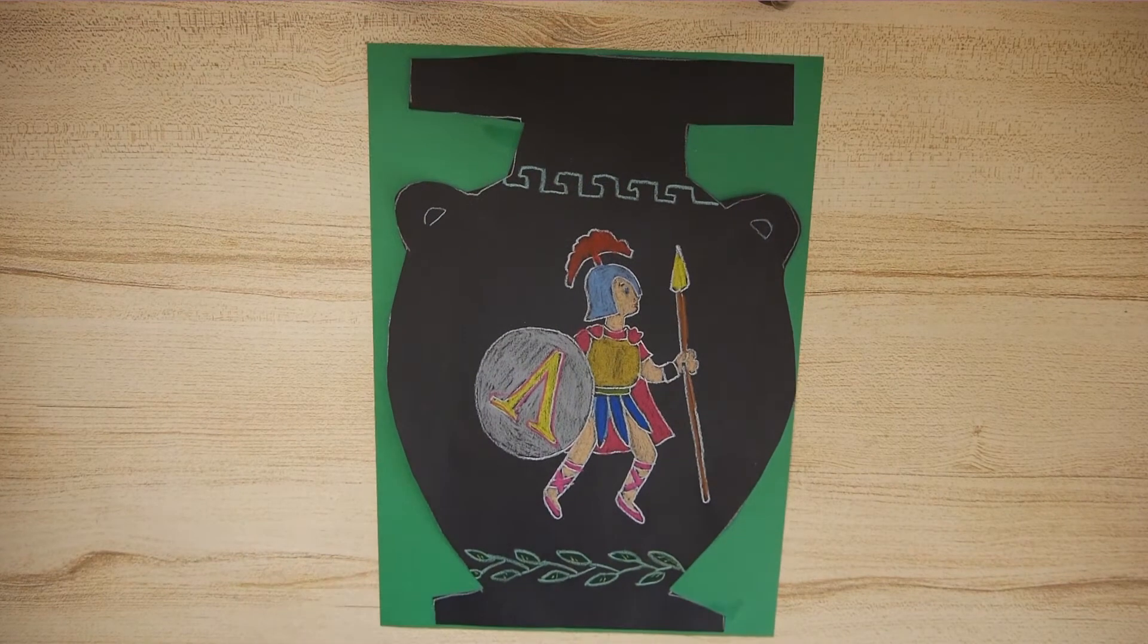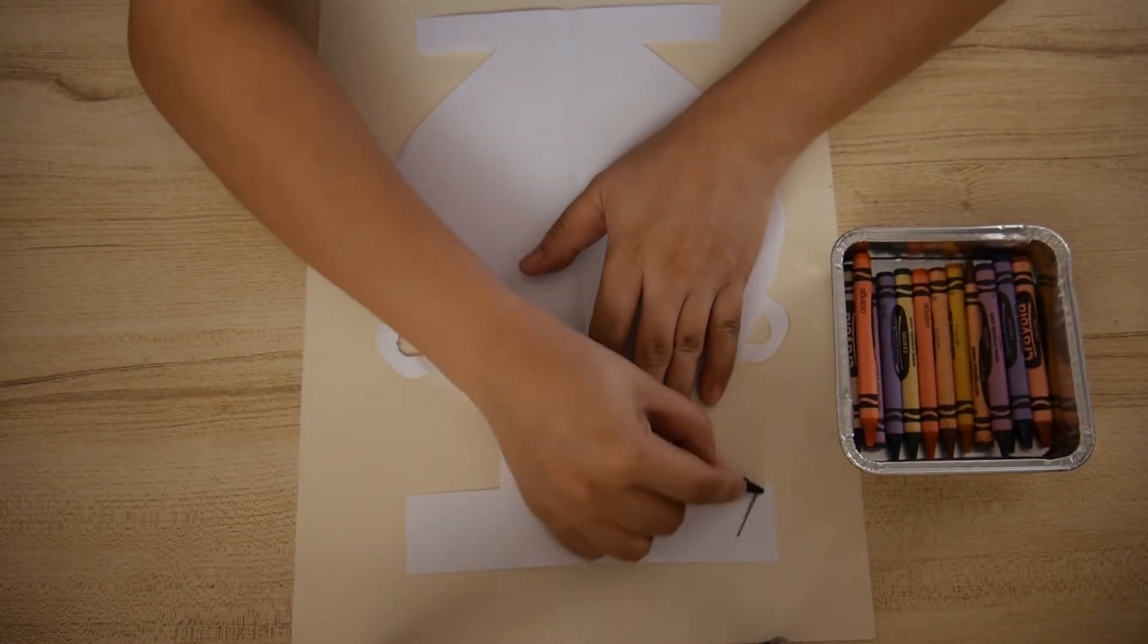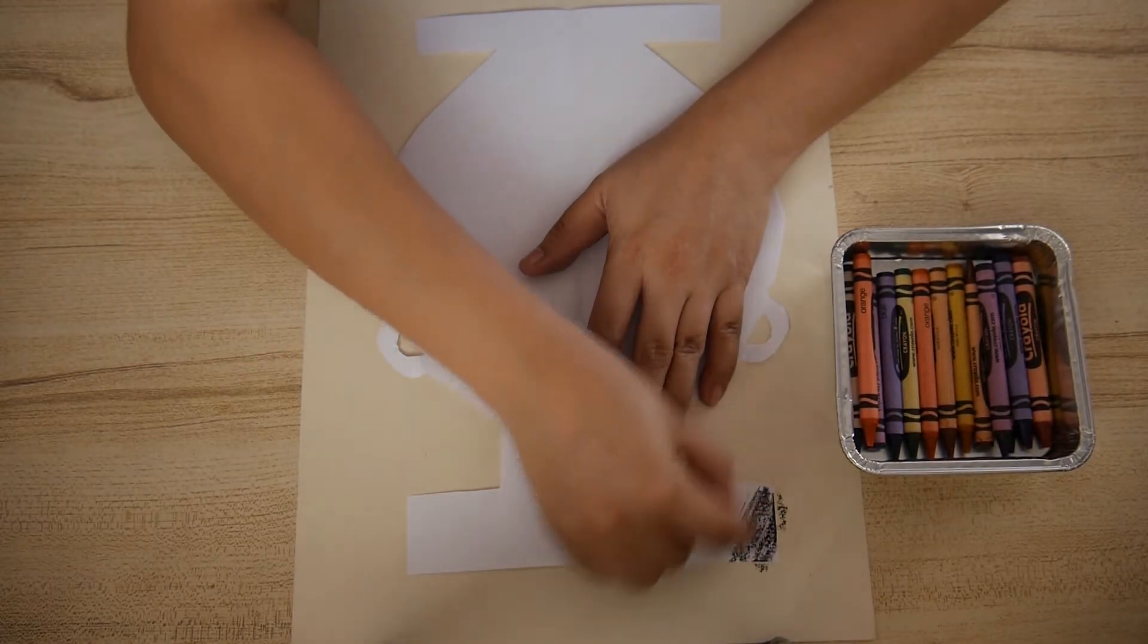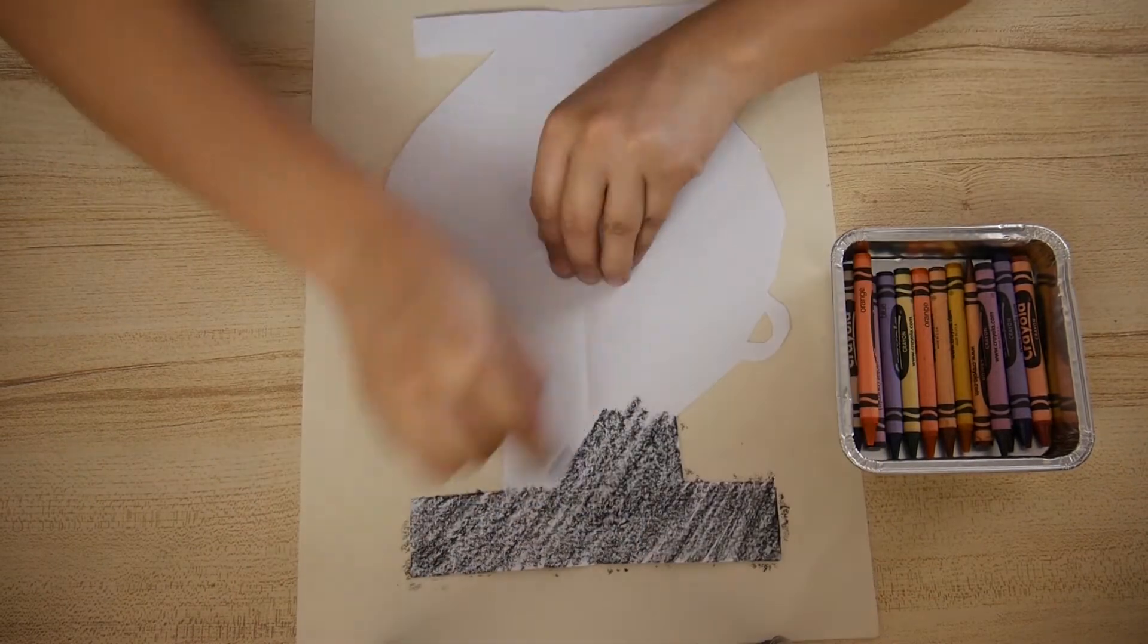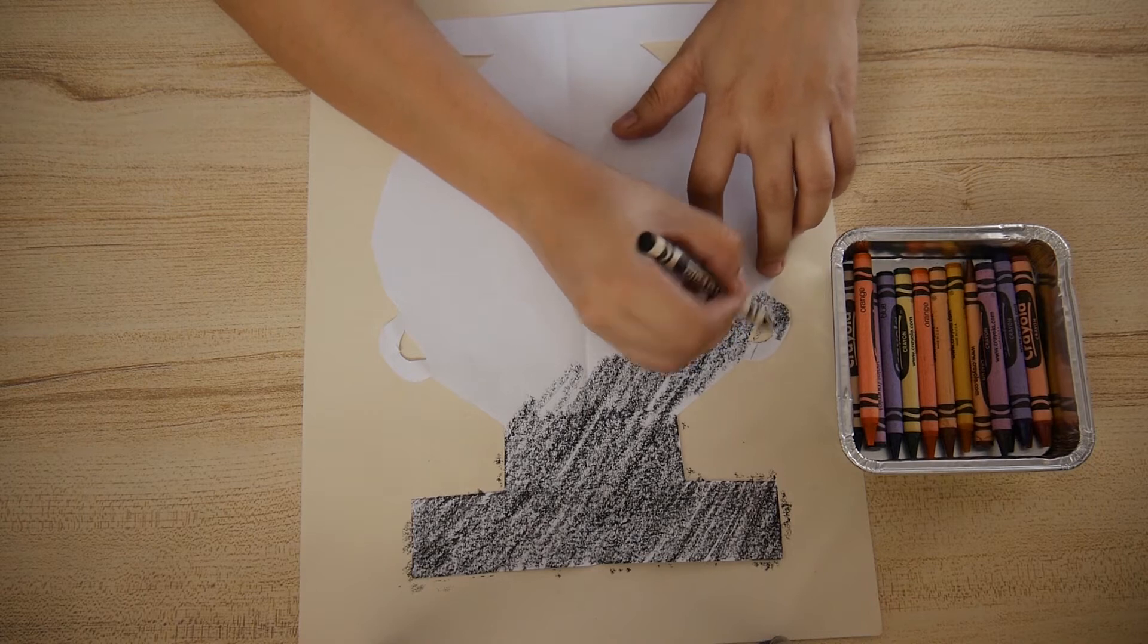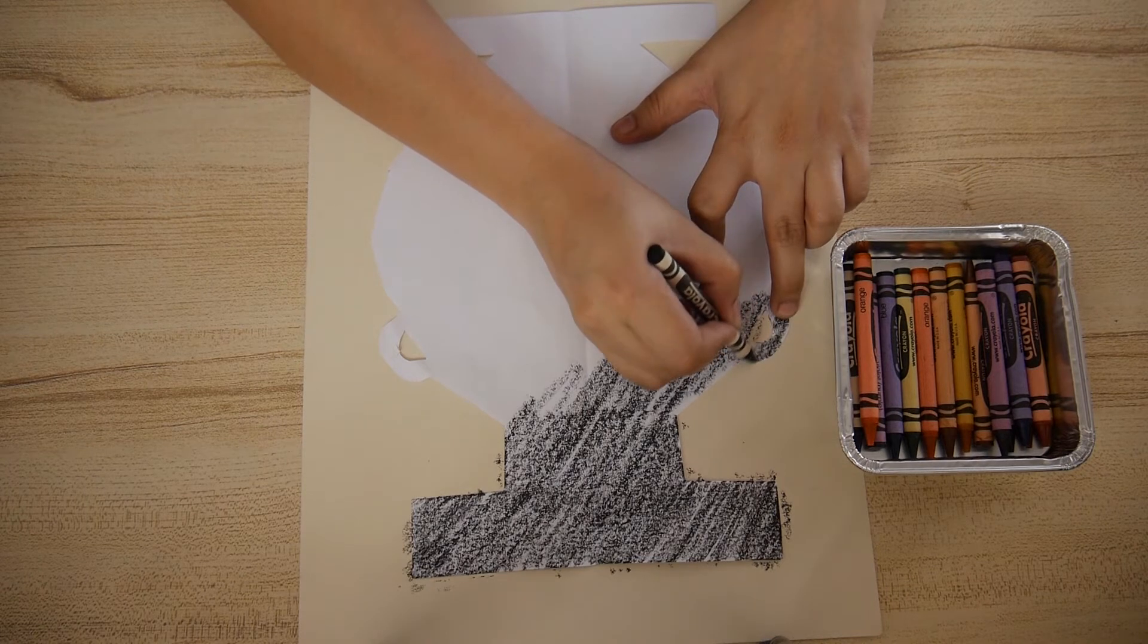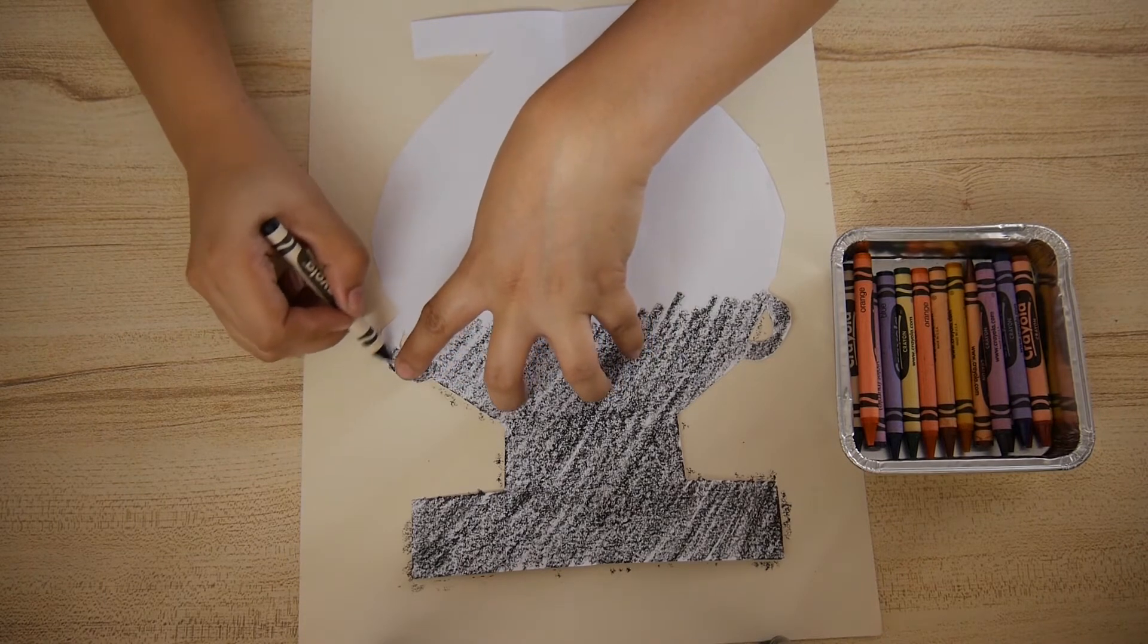If you don't have a black paper, there's another solution to this. You can color your amphora shape with black crayon. Once you reach the edges or the handle part, be very careful or you might tear it. So please color slowly and carefully.